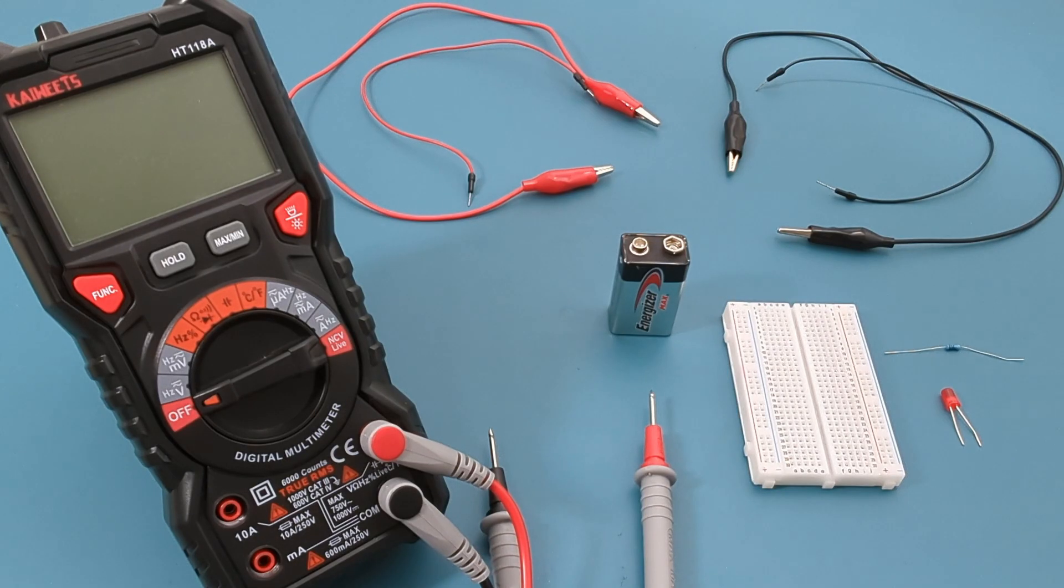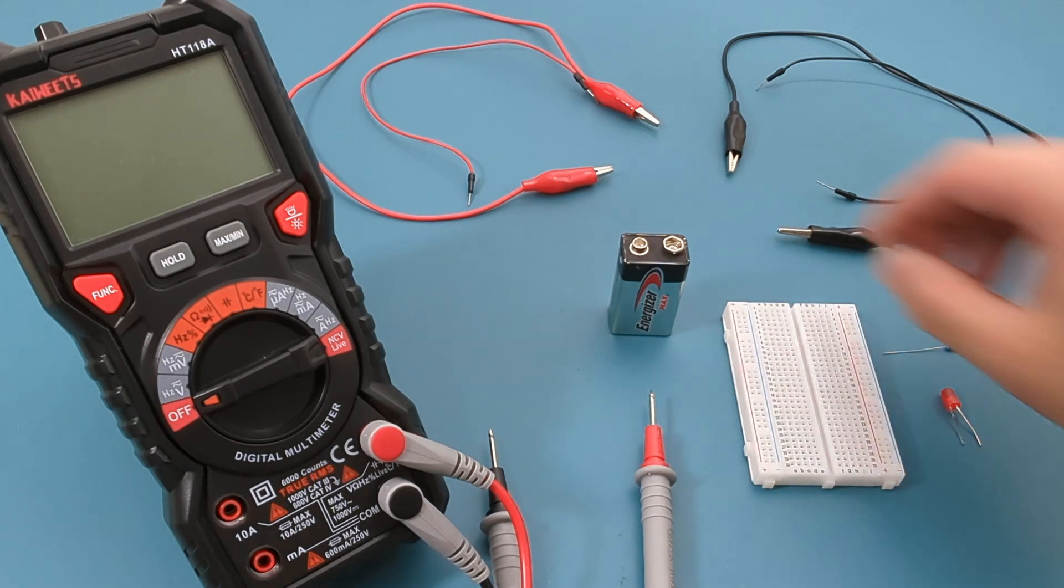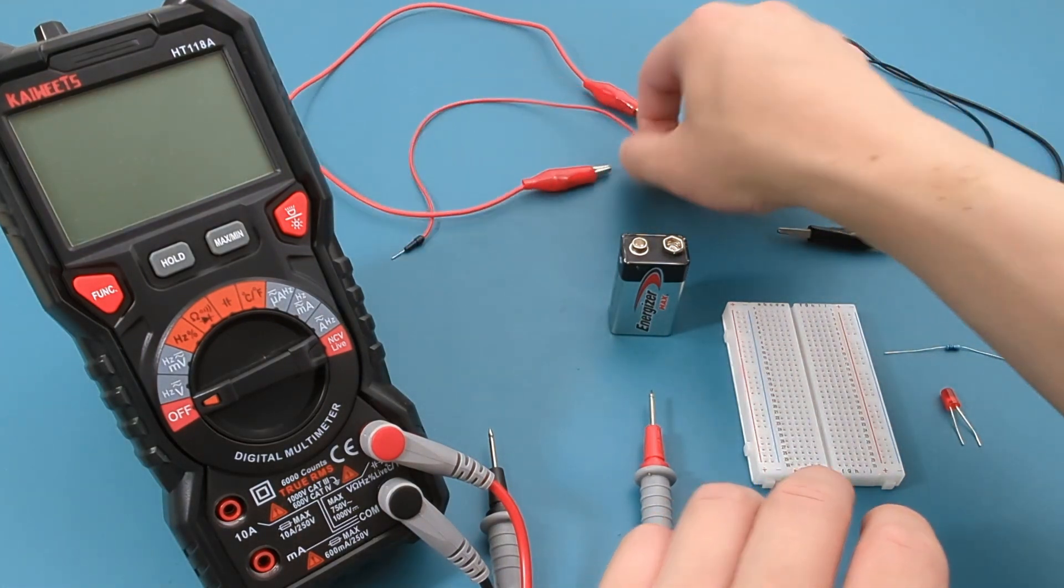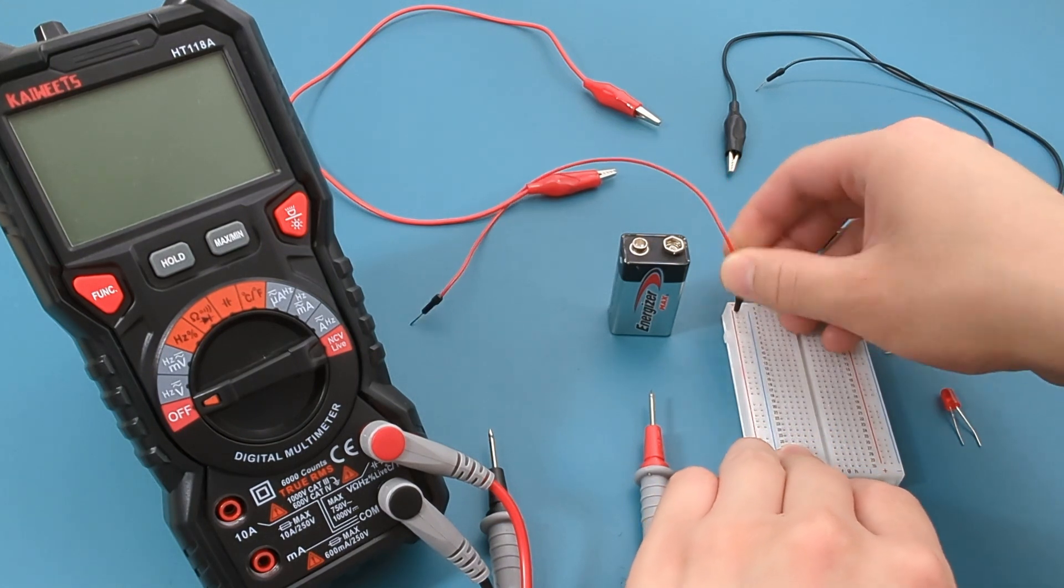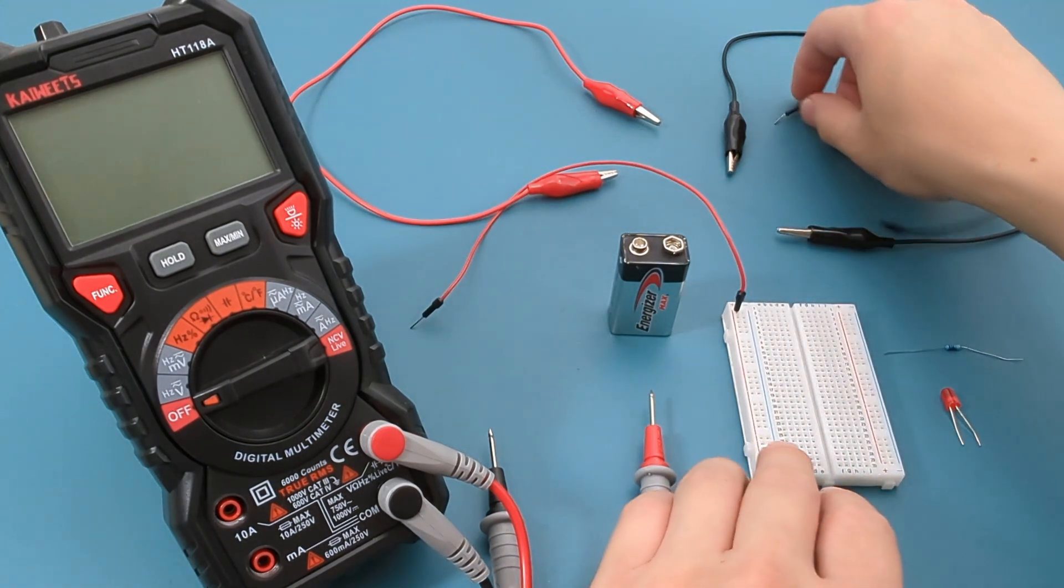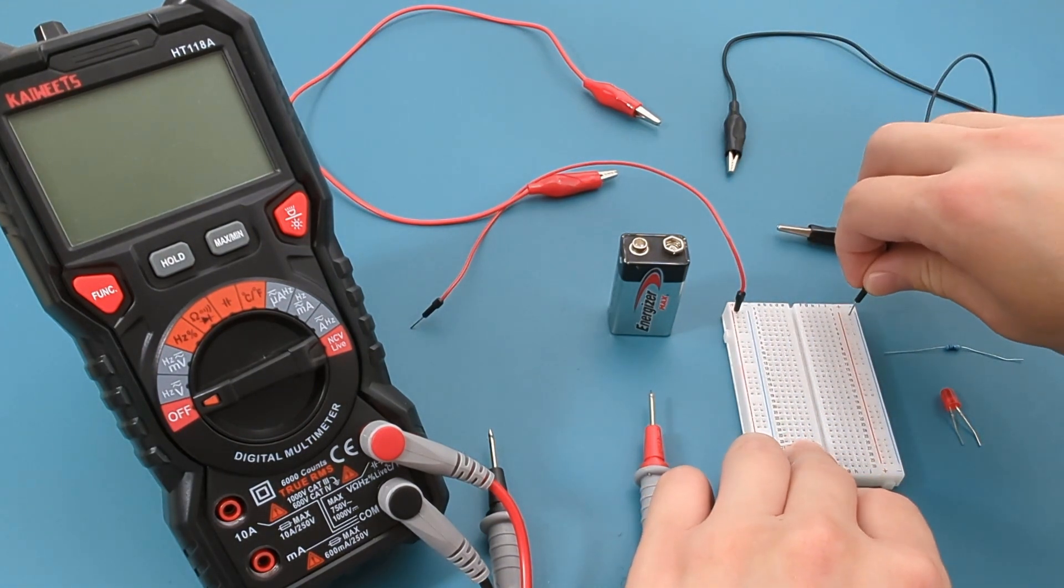Let's examine voltage drop using a circuit that includes a 9-volt battery, a resistor, and an LED. Connect the red jumper wire to the positive terminal of the breadboard. Connect the black jumper wire to the negative terminal of the breadboard.